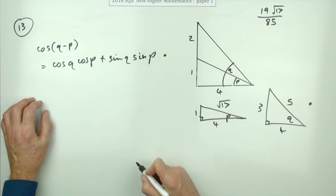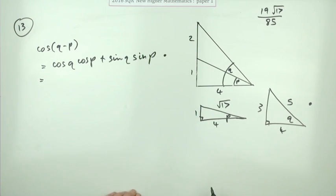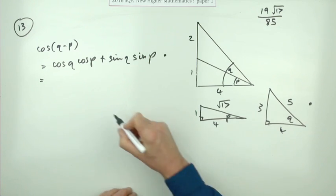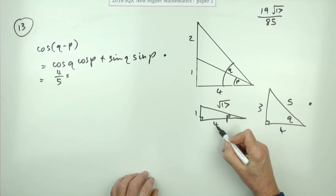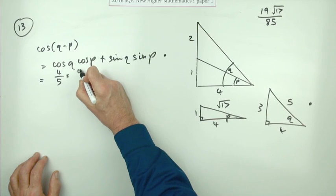Now you just feed in the bits and pieces. The cosine of q is adjacent to it, so that's 4 over the hypotenuse, that's 4/5. The cosine of p is adjacent to the angle—there's the angle there, remember—so that's 4 over √17.